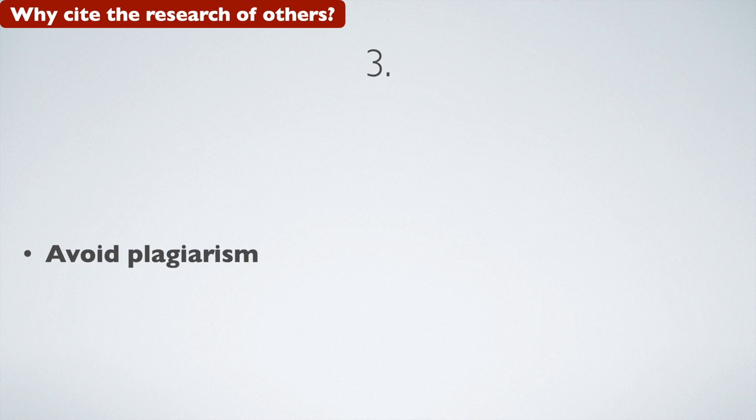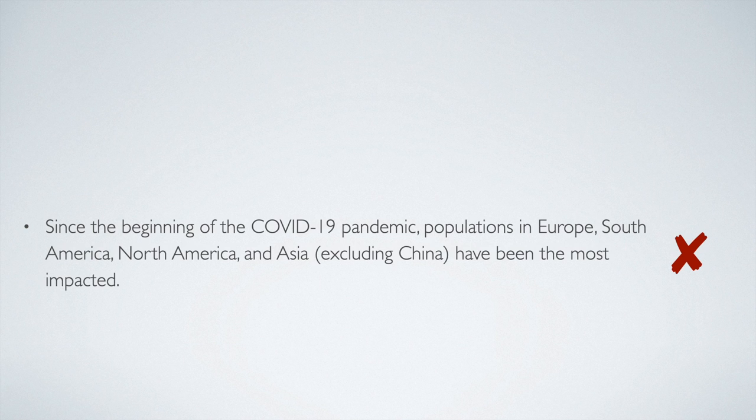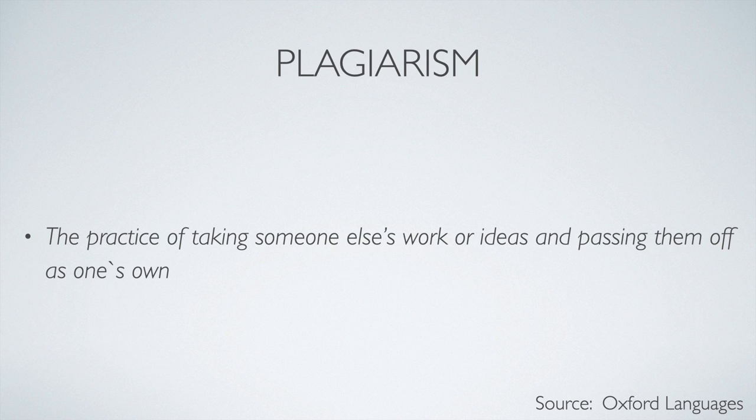Number three, we cite the research of others to avoid plagiarism. I took this information from a website. Therefore, this text has been plagiarized because its source has not been cited. Remember, plagiarism is the practice of taking someone else's work or ideas and passing them off as one's own. This is prohibited in academia and in research. Now, this text has not been plagiarized because the source has been cited.